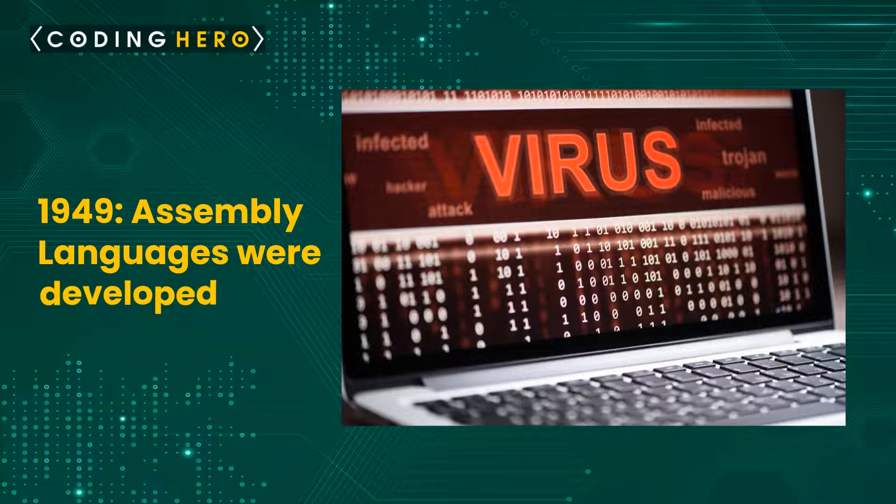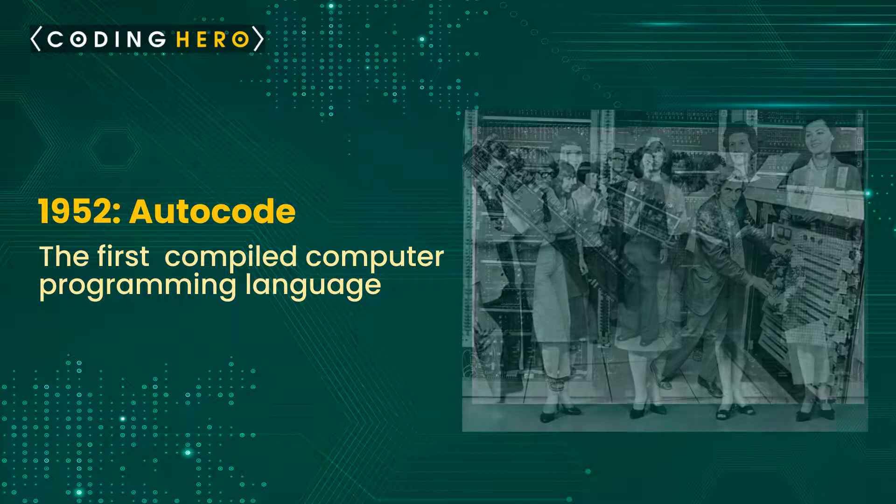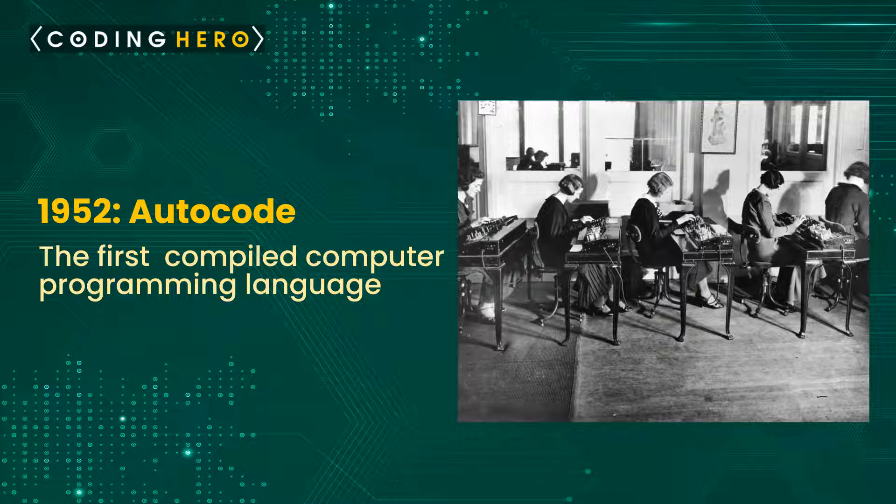In 1952, Autocode was introduced. Autocode was the first compiled computer programming language, developed by Alec Glennie. Autocode is actually the name of a family of simplified coding systems, later called programming languages, which opened the doors for the development of the first high-level languages such as COBOL and Fortran.